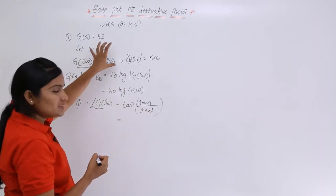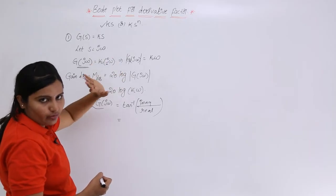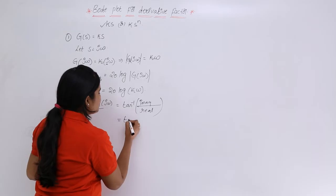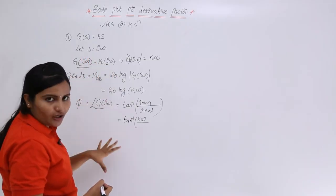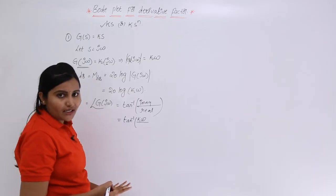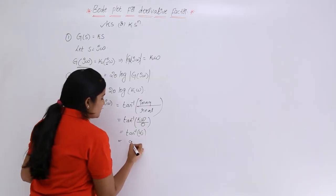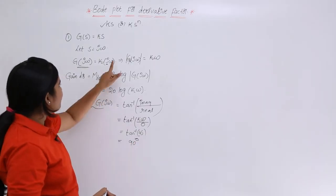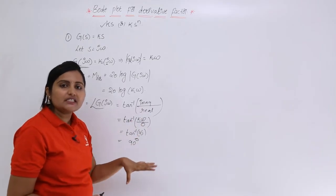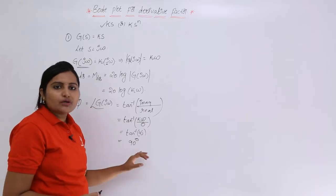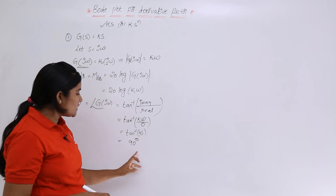Looking at the open loop transfer function G(jω) = K·jω, we have only an imaginary part: the imaginary part is Kω and there is no real part. For example, if you had 2 + Kjω, the real part would be 2, but here there is no real part, so it is 0. Therefore φ = tan⁻¹(Kω / 0) = tan⁻¹(∞) = 90°. Since ω is in the numerator and not in the denominator, we take +90°. If the frequency term were in the denominator, that would indicate a negative phase of −90°, but here it is not, so φ = +90°.